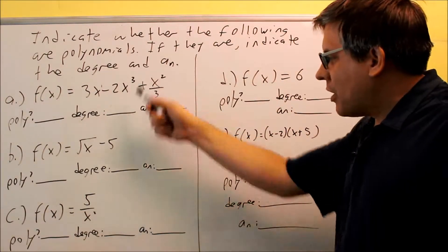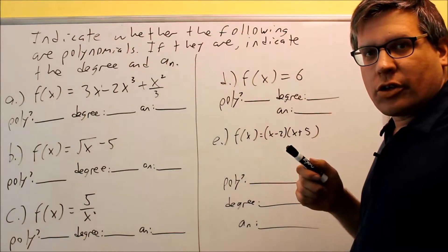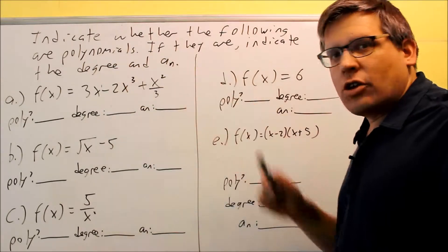Okay, for each of these parts, we have parts a through e. Each one we want to indicate whether it's a polynomial or not. And if it is a polynomial, we're going to indicate the degree and the a_n.